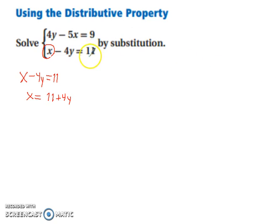Otherwise, you're just going to end up with 11 equals 11, which is going to kind of put you at a standstill. So we've got 4y minus 5 times—remember, hey, this x equals this whole quantity.